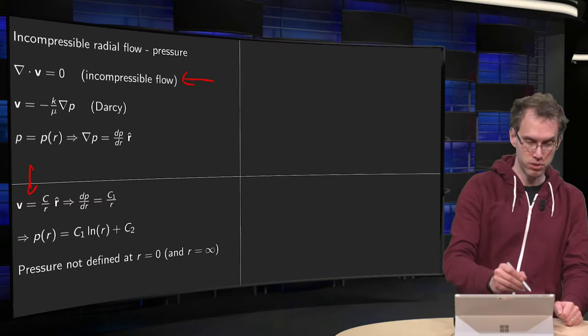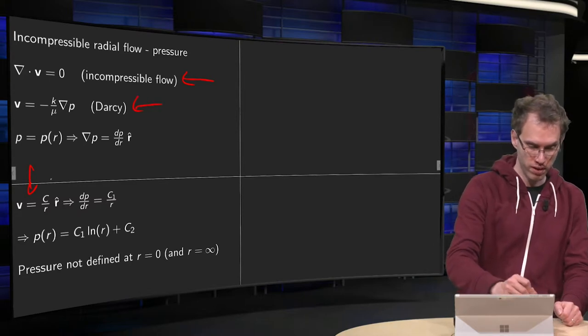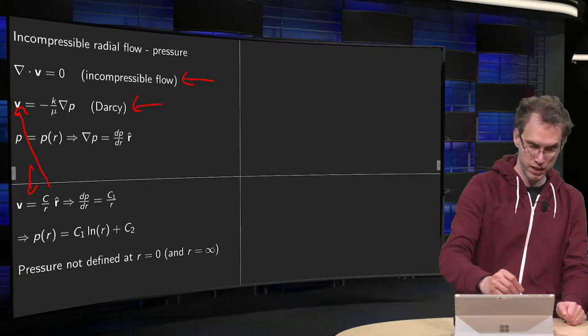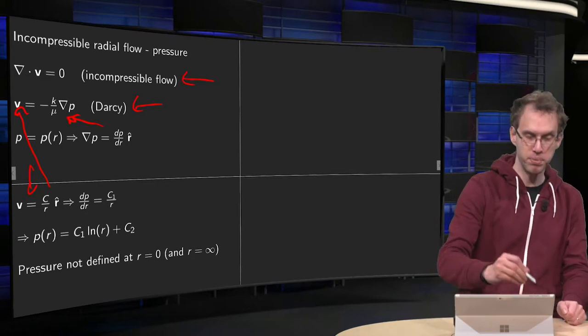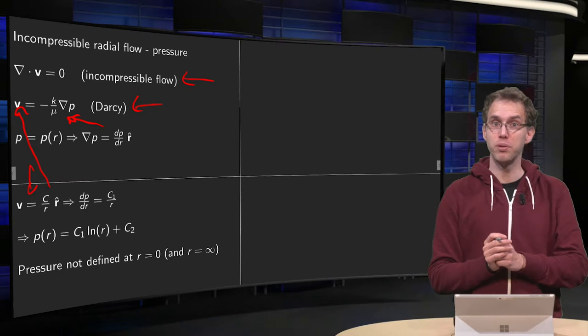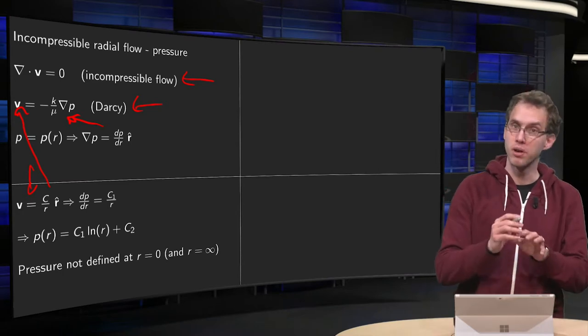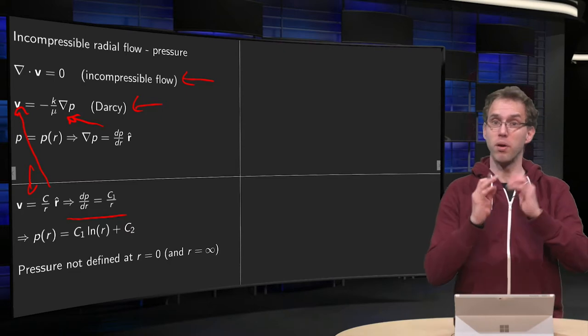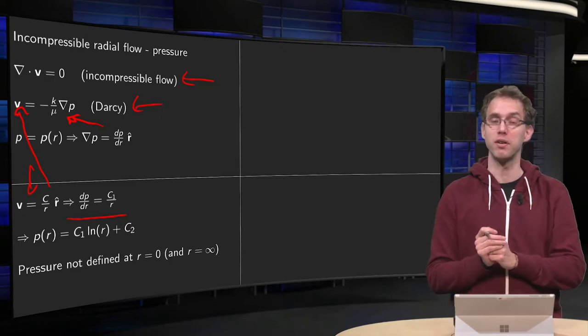And then we can use Darcy's law. We have here the c over r for v. For the gradient of v we have dp dr and the scale of mu is some constant, so combining this we have that dp dr equals some other constant divided by r.